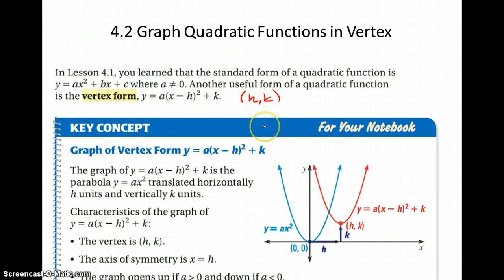So it's the opposite of h when you're writing it as a vertex. And then a is not a slope. Remember, it's going to tell you if it opens up or if it opens down.